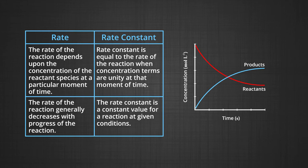Thus, the rate law for any reaction cannot be predicted merely by looking at the balanced chemical equation, but must be determined experimentally. It is very important to know the difference between the rate of the reaction and the rate constant. The rate of the reaction is the speed at which reactants are converted into products, while the rate constant is the proportionality constant in the rate law expression. The rate of the reaction depends upon the concentration of reactants at a particular moment, while the rate constant equals the rate when concentration terms are unity. The rate of the reaction generally decreases with progress of the reaction, whereas the rate constant is a constant value for a reaction at given conditions.